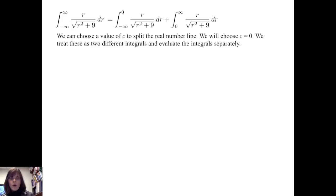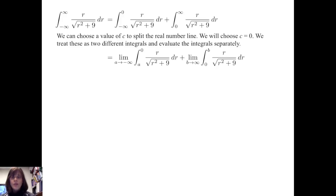Let's consider another example: the integral from negative infinity to infinity of r over the square root of r squared plus 9, dr. Our first step is to split the real number line at some value we choose — let's let c equal zero. We rewrite the improper integral as the sum of two improper integrals: the integral from negative infinity to zero of r over the square root of r squared plus 9 dr, plus the integral from zero to infinity of r divided by the square root of r squared plus 9 dr. We proceed by evaluating two separate limits: the limit as a goes to negative infinity of the integral from a to zero, plus the limit as b goes to infinity of the integral from zero to b.